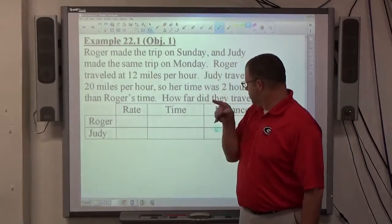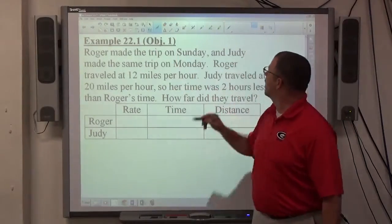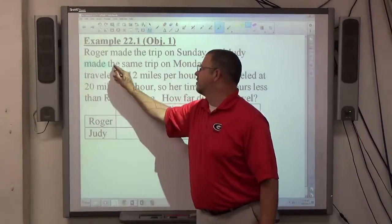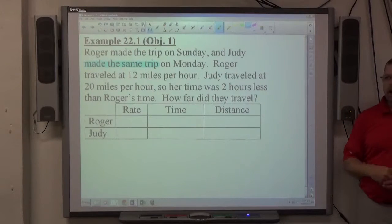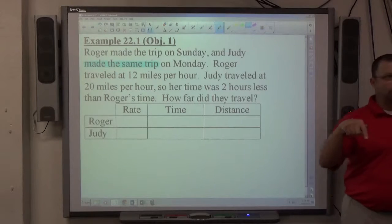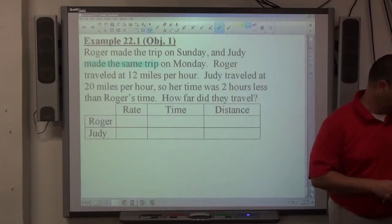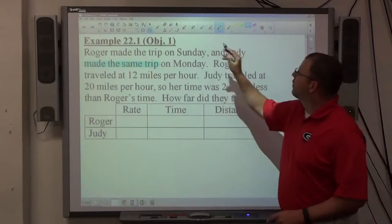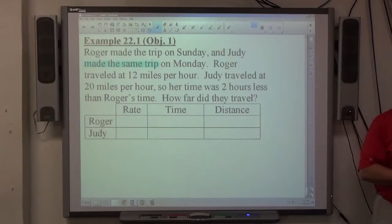We have Roger and Judy, and these two people are in different vehicles making the same trip on different days. So let's focus first of all on the words 'made the same trip.' If I went from Tilden to Norfolk today, and you went from Tilden to Norfolk tomorrow, we made the same trip, right? What's true about those two trips? The distances will be equal to each other. So the first priority on these problems always is to establish the relationship in the distances.